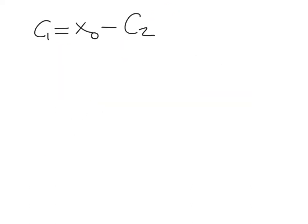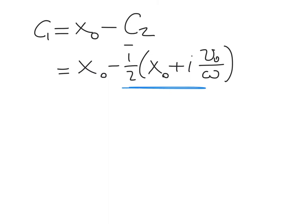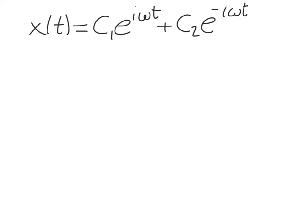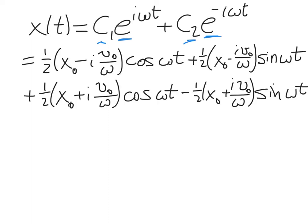Plugging in our solution for c2, we get c1 = (1/2)(x₀ − i·v₀/ω). Now let's plug these solutions for c1 and c2 back into our full solution for x(t) to see what that looks like. Our solution was c1·e^(iωt) plus c2·e^(−iωt). We substitute in c1 and c2, and also replace the complex exponential terms with their cosine and sine equivalents, giving us a large expanded expression.